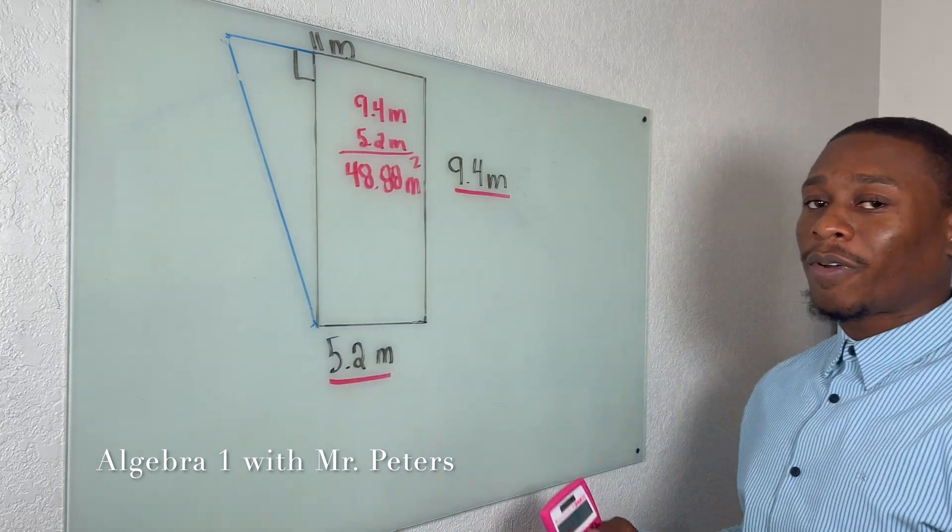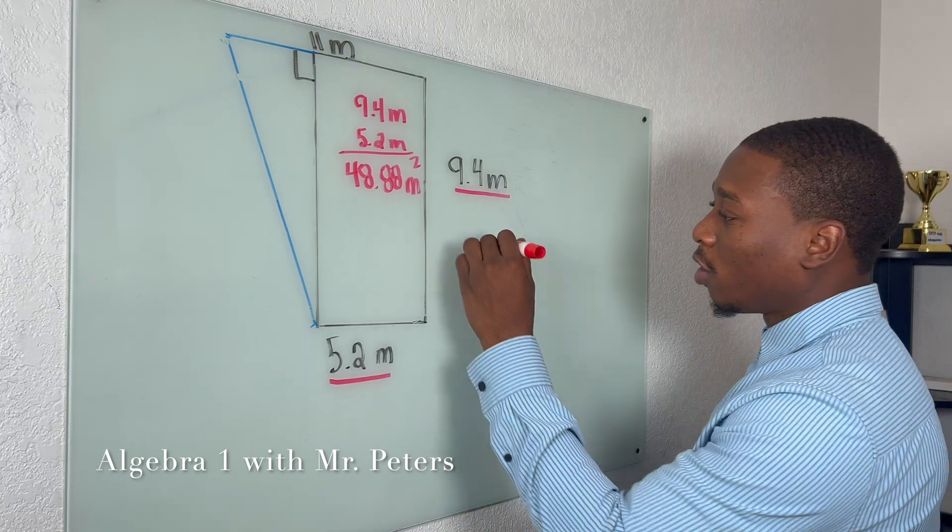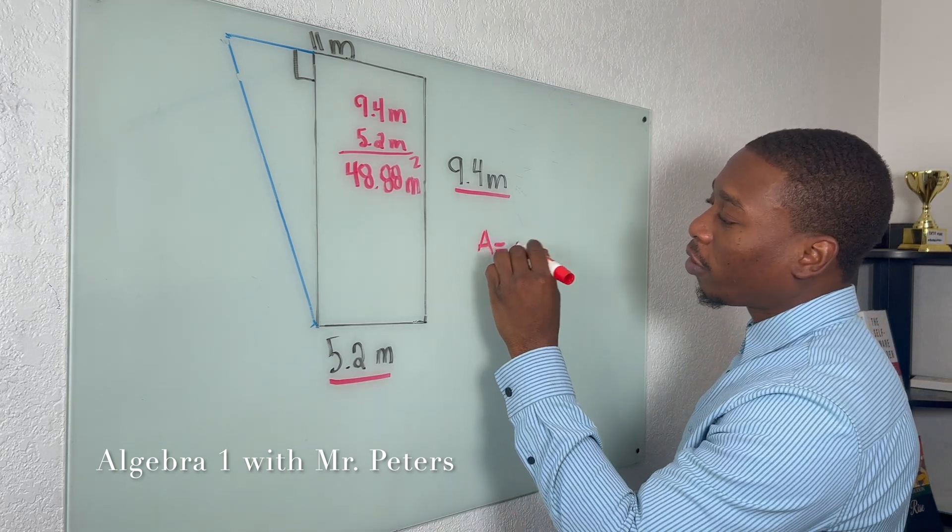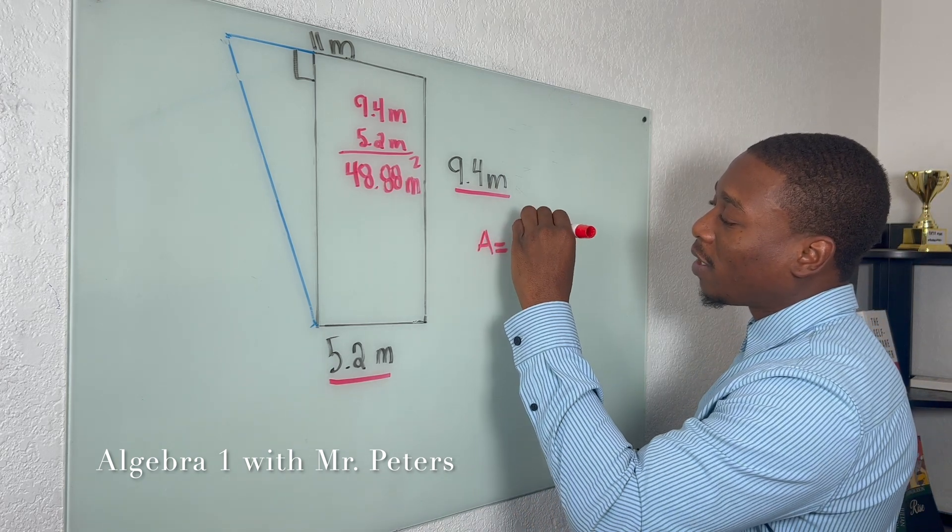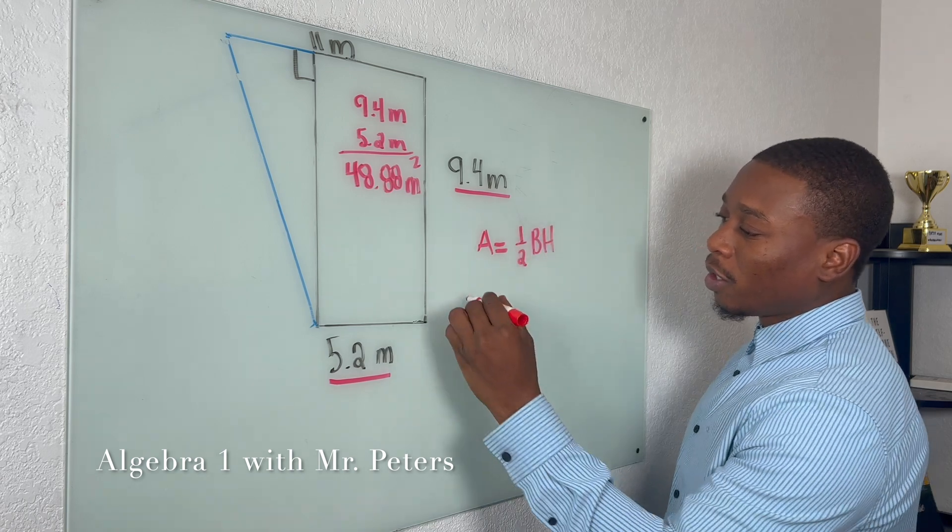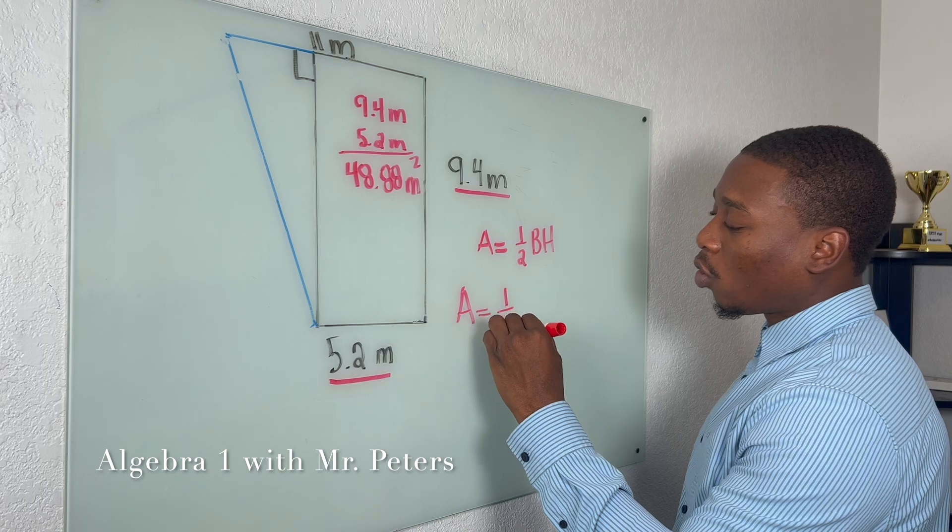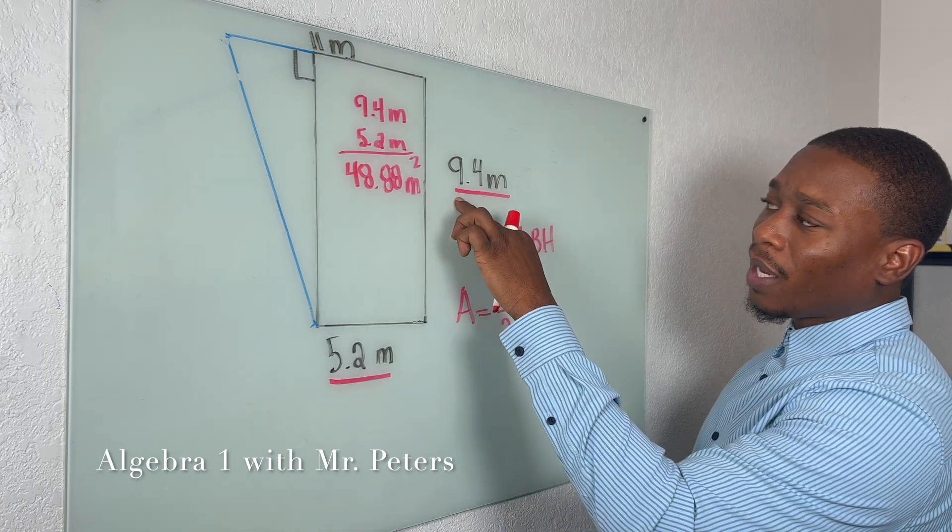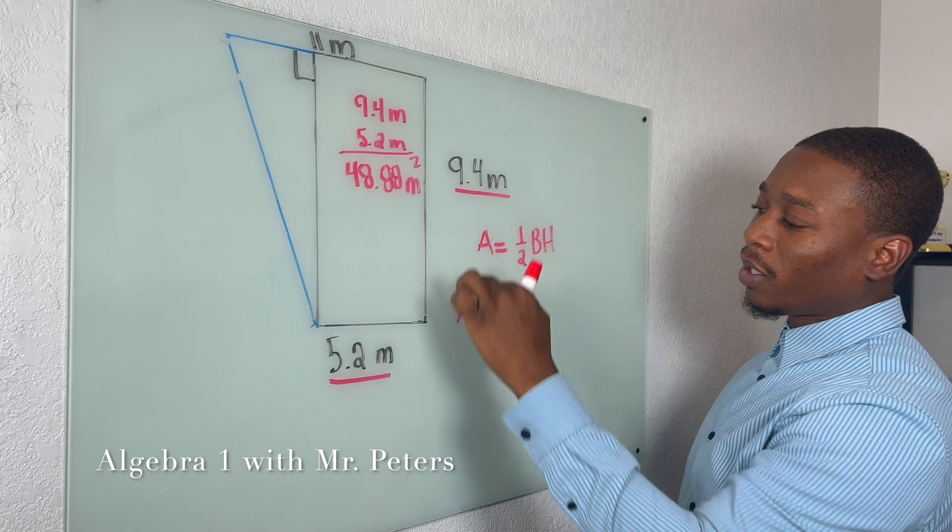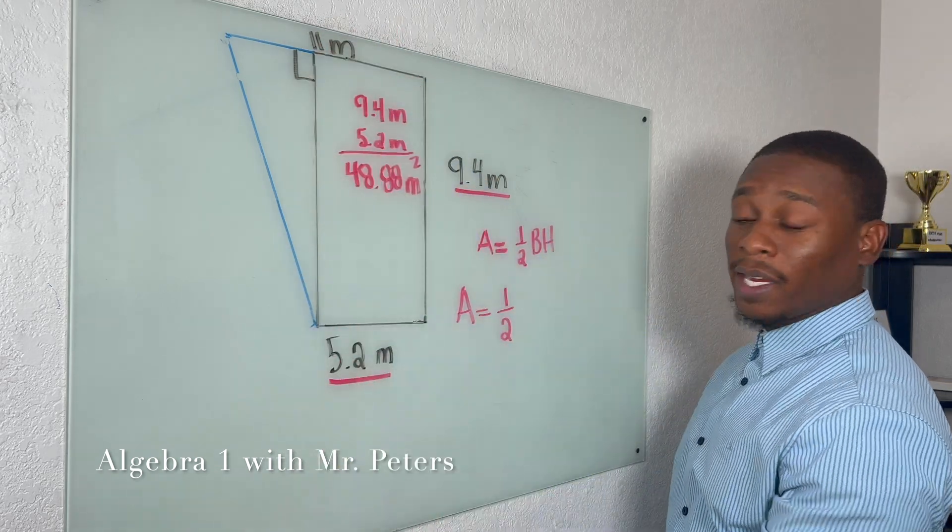Now we're going to try to find the area of the triangle. So we know that the formula for area of a triangle is half the base times the height. So let's fill this information in. So we have area is equal to one half. Our height, we know is 9.4 meters, that's the height.